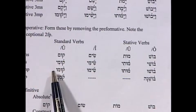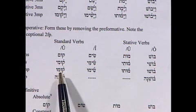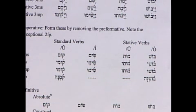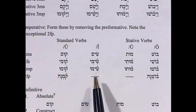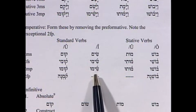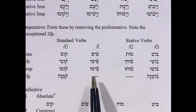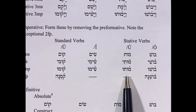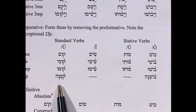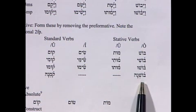For Qal imperatives of the standard verb with an original Vav, you get qum — just tear off the performative of the imperfect. The forms are: qum, qumi, qumu, and watch out for the rare 2FP qomna, which is irregular. For the R2 Yod: sim, simi, simu — the original hireq-yod as opposed to the original Vav in the first column. Similarly, mut/muti/mutu, and bosh/boshi/boshu/boshna.